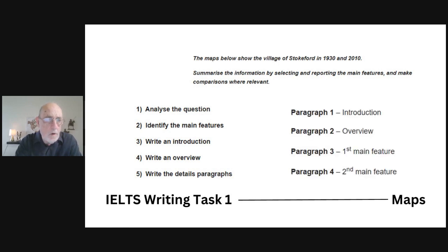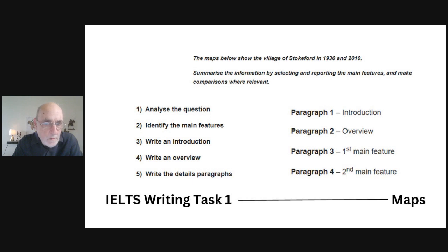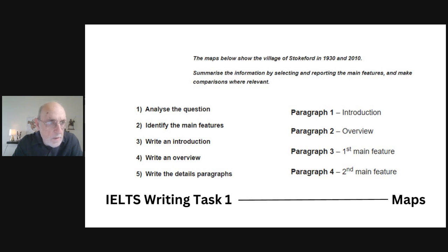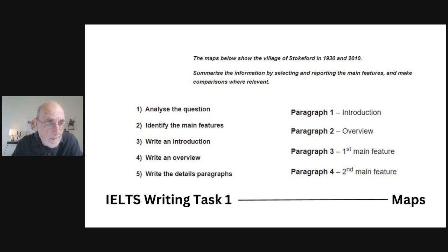Overall, your essay will have four paragraphs. Paragraph one will be the introduction. Paragraph two will be your overview of both maps. Paragraph three will be where you pick out your first main feature, describe it, and compare it. And paragraph four will be where you choose your second main feature. You will not write about every little detail of each map — choose and identify the main features that are most relevant, and you don't want to have any more than four paragraphs.